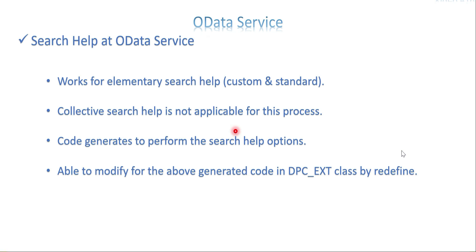The code generates to perform the search help options. It supports search helps — whatever search you execute on the OData service, it will automatically work for all values without any input. If you give any values, it will automatically filter and send values based on your user input. Top will also work — so pagination like top 10, top 20 records will work. Skip — skipping the first few records — also works. The count and most of the URI options will work because the code has been generated for all those processes.